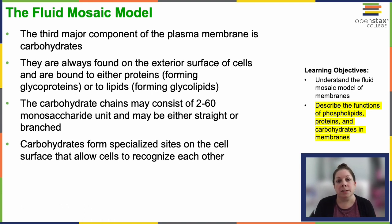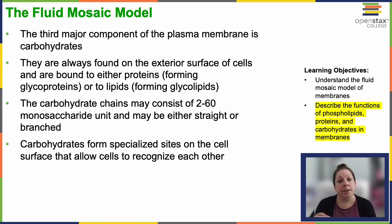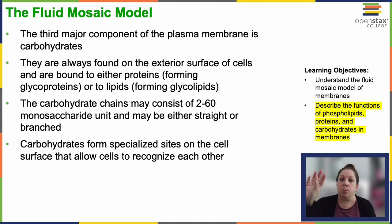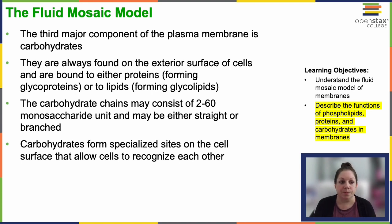Another thing that cells use these structures for is to display. Certain cell types — like if they get infected with a virus — will then display viral particles so that the immune system sees and recognizes that this cell is infected and needs to be taken care of.